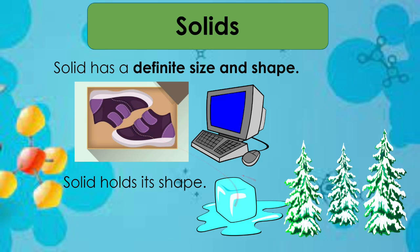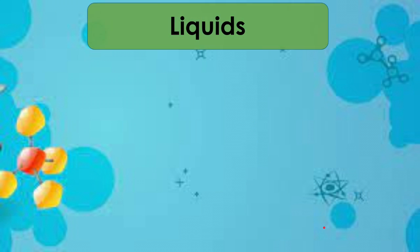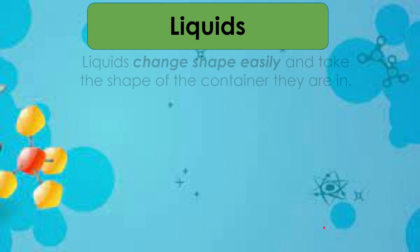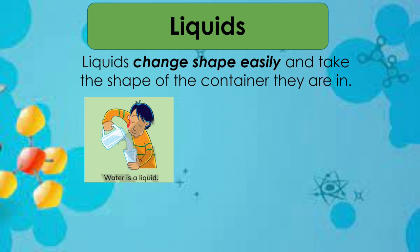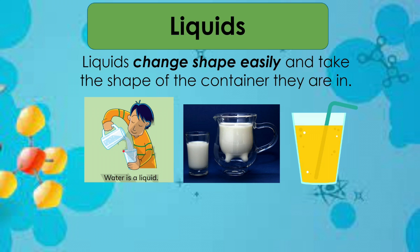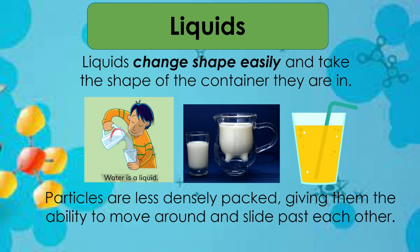Now let's talk about liquids. Liquids change shape easily and take the shape of the container they are in. Water is an example of a liquid, and so are milk, juice, and lemonade. We can pour liquid water from one container into another — liquid water takes on the shape of its container. The particles are less densely packed.